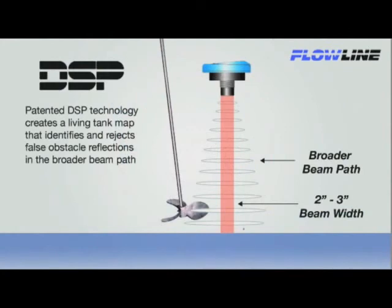Flowline's digital signal processing or DSP technology creates a living tank map that identifies false obstacle reflections in the full beam path. DSP is able to filter out false obstacle reflections and track the true level of liquid.